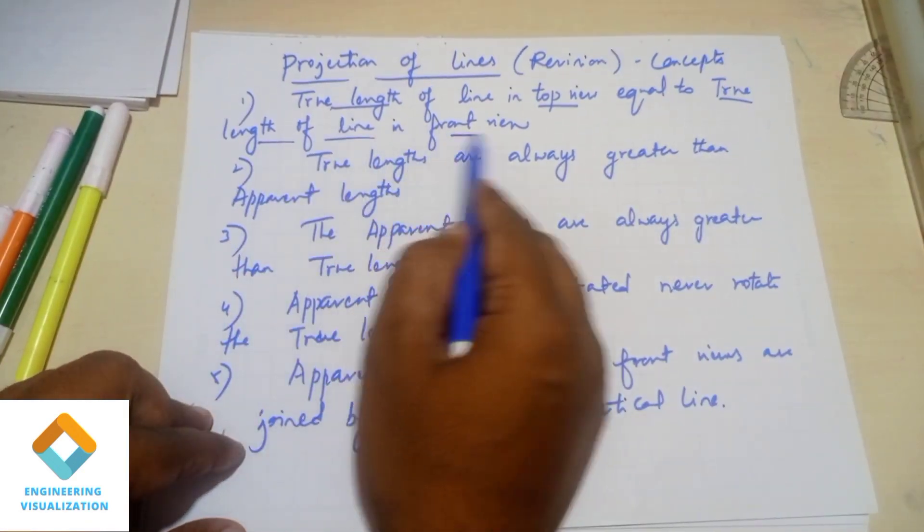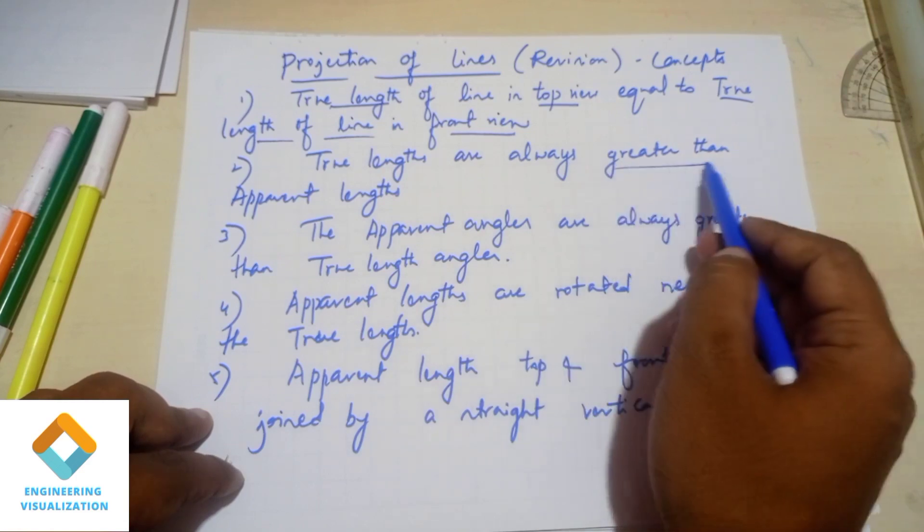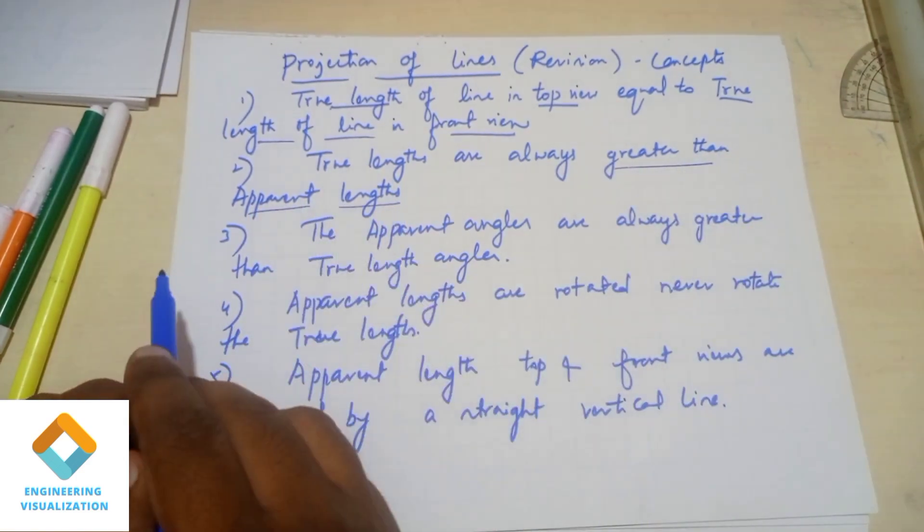First, true length of line in top view is exactly equal to true length of line in front view. That is the first. Next,